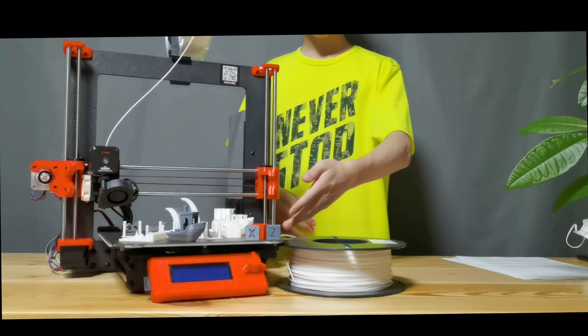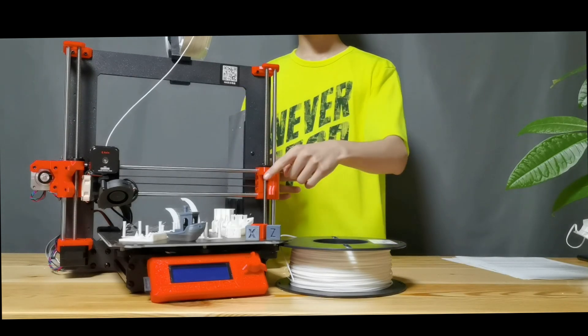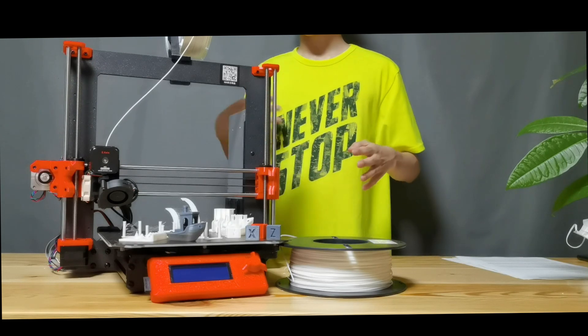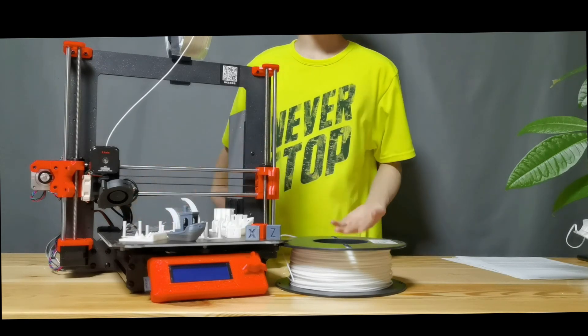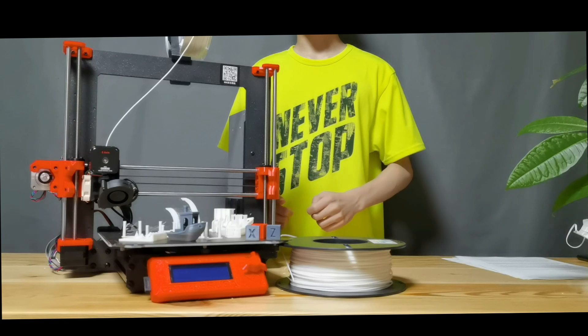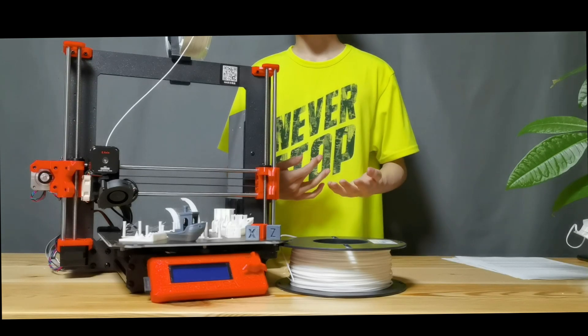And for the bed, it's quite interesting. 25 by 21 centimeter bed. It's a PCB heated bed, the Mark 52. Same thing you'll find in any other Prusa i3 Mark 3.